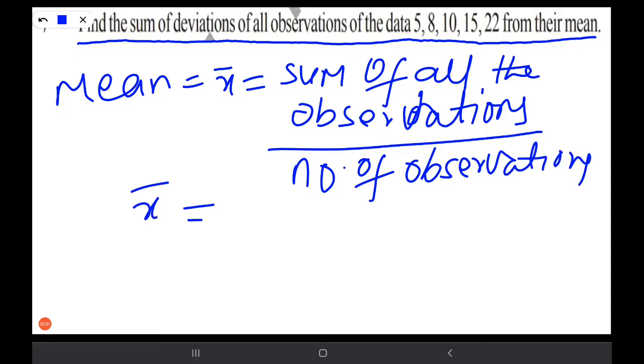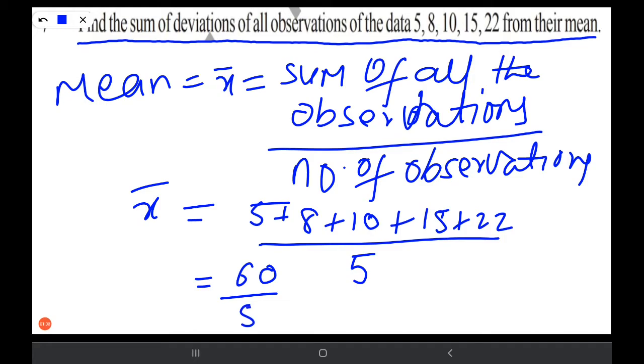What are the observations given? 5 plus 8 plus 10 plus 15 plus 22 by number of observations, which is 5. The sum becomes 60 by 5.